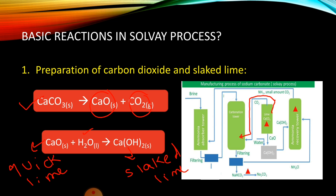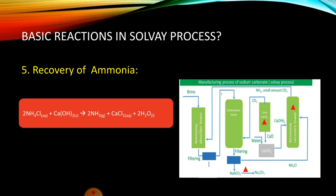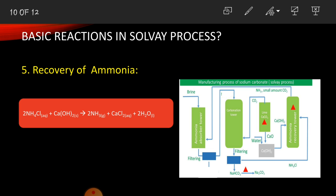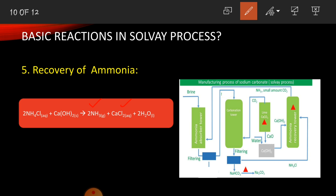After the formation of slaked lime, we perform the recovery of ammonia. Ammonium chloride (from the carbonation tower) reacts with calcium hydroxide (slaked lime) in the ammonia recovery tower to form ammonia, calcium chloride, and water. This is how, at the end of the Solvay process, ammonia is easily recovered.